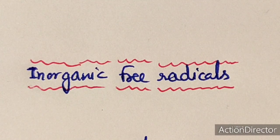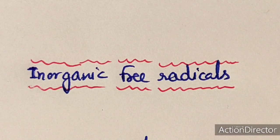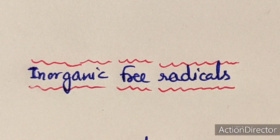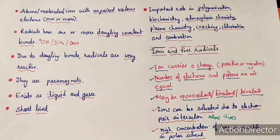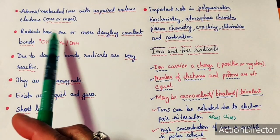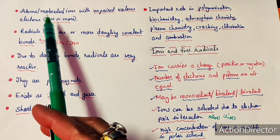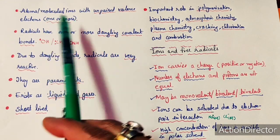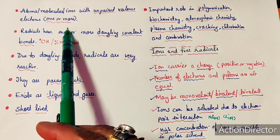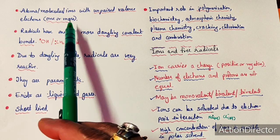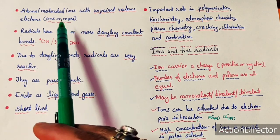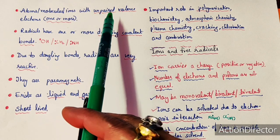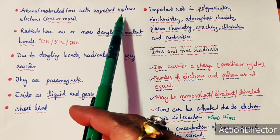Free radicals are very important, both in the human body and industrially — they are generally intermediates during some reactions. Now let's study about inorganic free radicals. Radicals can be defined as atoms, molecules, or ions with unpaired valence electrons. The valence electrons may be one or more, so it should have unpaired electrons in its valence shell.